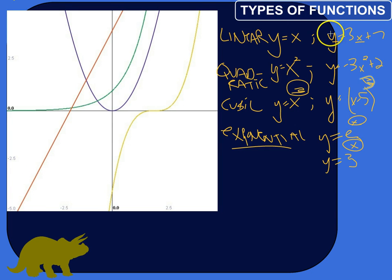So, a linear function, as the name says, forms a straight line. Linear means a line, so a straight line. A quadratic function forms a parabola. That's something like this, where the two arms, if you will, go off forever in the same direction.